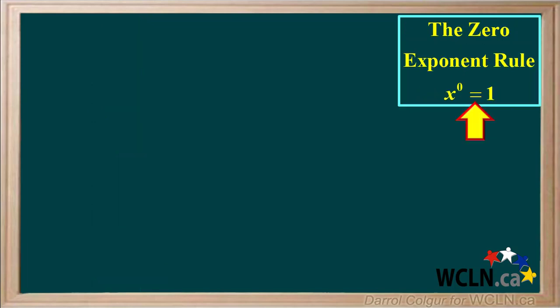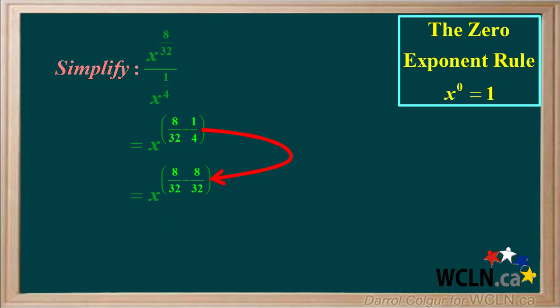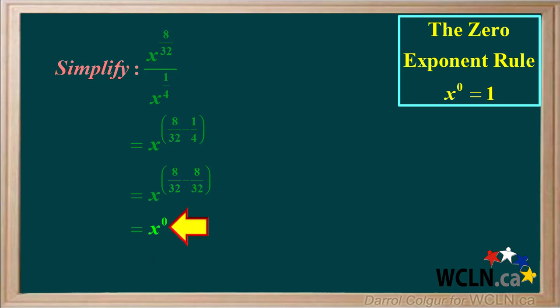The last rule we'll look at is the zero exponent rule. It states that anything to the power of zero is equal to 1. Let's do an example. We're asked to simplify x to the power of 8 thirtieths divided by x to the power of 1 quarter. According to the quotient rule, this is equal to x to the power of 8 thirtieths minus 1 quarter. 1 quarter is the same as 8 thirtieths, so 8 thirtieths minus 8 thirtieths is equal to 0. We have x to the power 0, and applying the zero exponent rule tells us that x to the 0 is just equal to 1. So the final answer is 1.